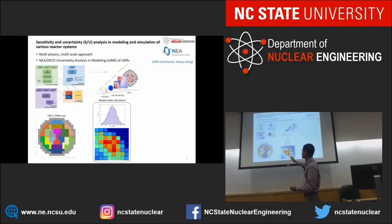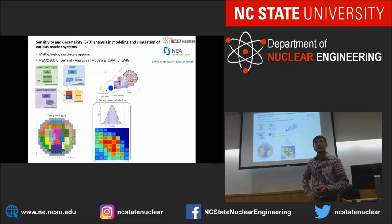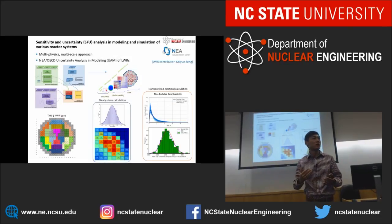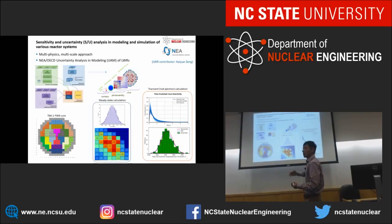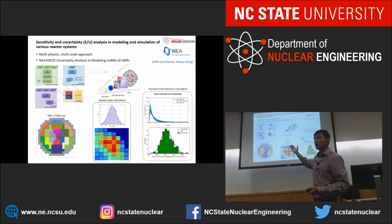This is the reactor core power distribution, and you can see there is also quite significant uncertainty coming from that. Moving from steady state to transient, we're modeling a rod ejection type of accident. You can see that the core reactivity as a function of time has a quite wide span of range, and this will actually affect your safety margin in the transient.